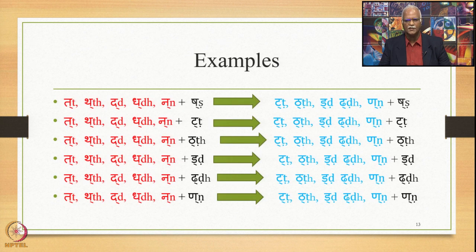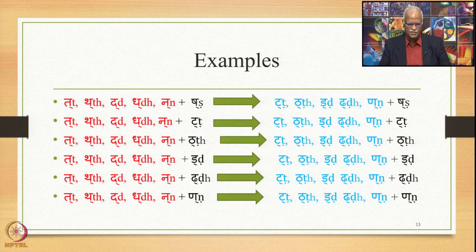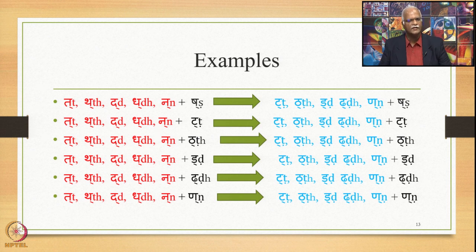Here are the template examples. We have Ta-Tha-Da-Dha-Na plus Shtu plus Shtu and the substitution is Ta-Tha-Da-Dha-Na plus Shtu. In place of Sha comes Ta, and the output involves Tavarg being substituted by Tavarg in all these cases.